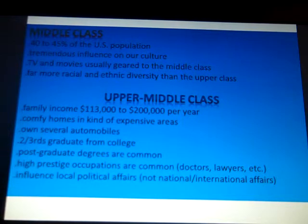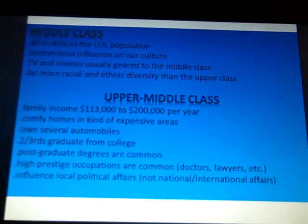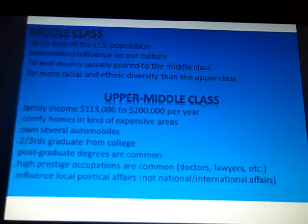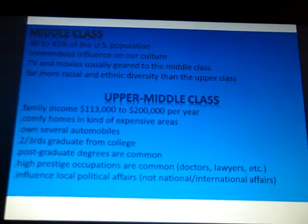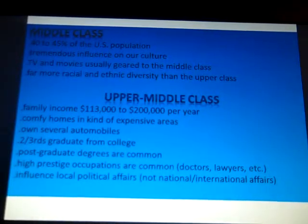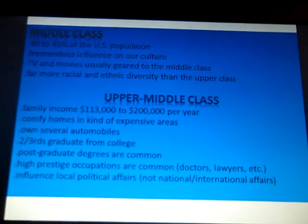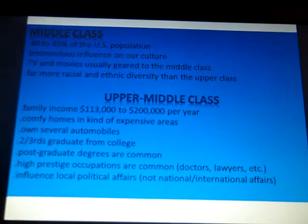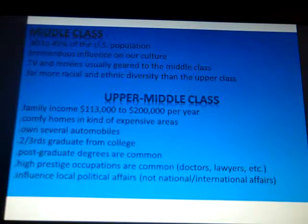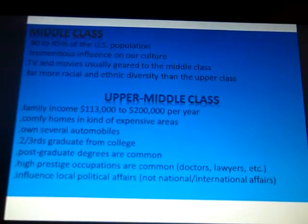TV shows and movies are also geared to middle-class populations. There's far more racial and ethnic diversity here than in the upper class. Within the upper class it's still, for the most part, Caucasian — that's not to say that ethnic minorities have not climbed into the upper class, but that is still the exception and not the rule. In the upper-middle class, family income ranges from $113,000 to $200,000 per year. They live in comfortable homes in kind of expensive areas, and may own several automobiles — two or three.